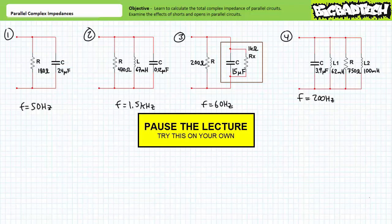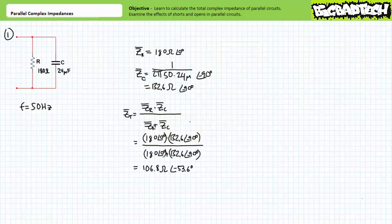If you're tracking, you should have obtained the following results. For our first example problem, we're given a parallel relationship of a 180 ohm resistor and a 24 microfarad capacitor at a frequency of 50 hertz. The resistor is an impedance of 180 ohms at an angle of zero degrees. The capacitor is an impedance of 132.6 ohms at an angle of negative 90 degrees. Calculating the total impedance using the quick and dirty method for two impedances in parallel, we arrive at a total impedance of 106.8 ohms at an angle of negative 53.6 degrees.